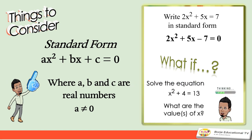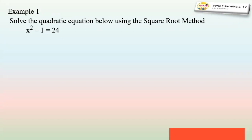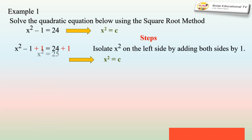Now, what if we have the equation x² + 4 = 13? How can we solve for the values of x? In solving quadratic equations by the square root method, make sure the equation is in the form x² = c. Here are the steps.